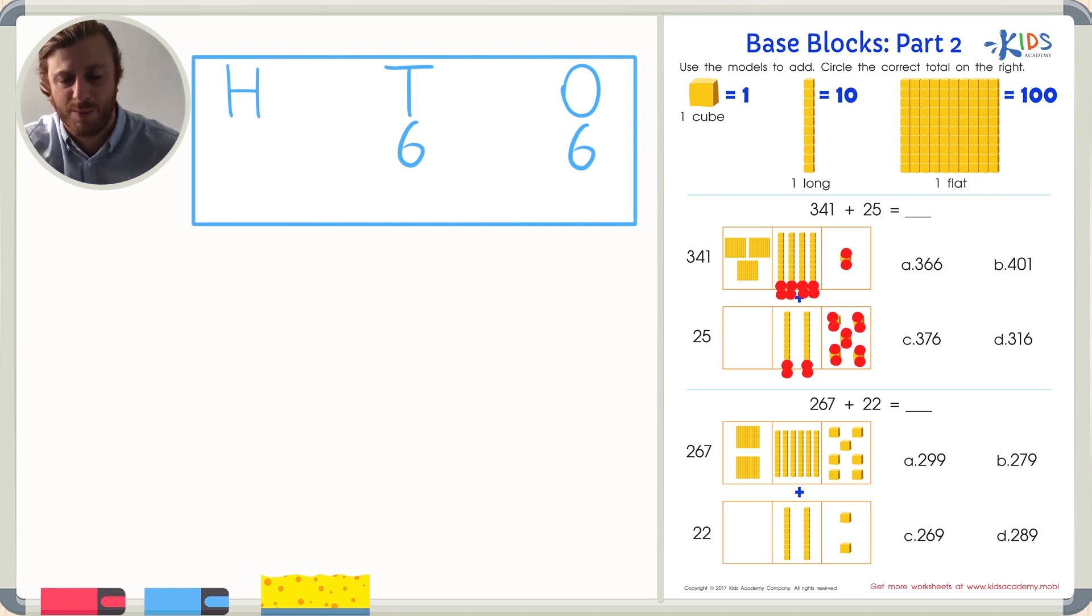Then if we go over to the hundreds place, number 25 has no hundreds. But the number 341 has one, two, three hundreds. So let's put that in the hundreds place. Now we can just read this beautiful number all together. I know the number I'm looking at is 366. And that's choice A. So we can circle choice A.